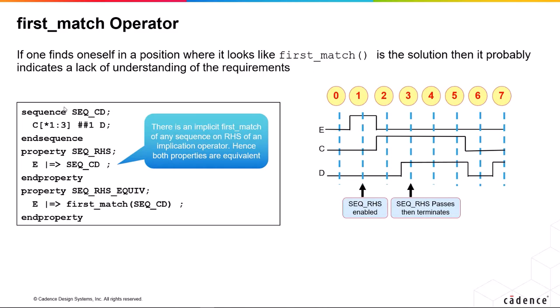Here's an example of first match and why people tend to use it. We'll first describe an implicit first match before we describe where it's actually used. In this case, we've got a sequence called CD and it's a variable length — we can have between one and three occurrences of C followed by D.